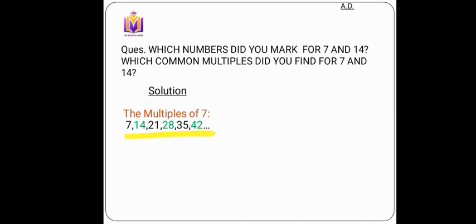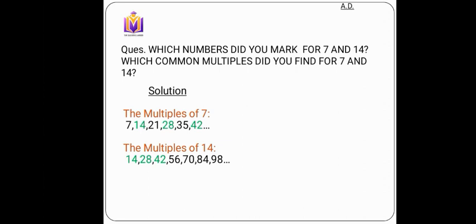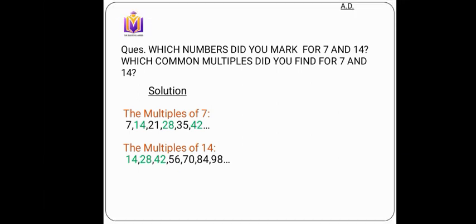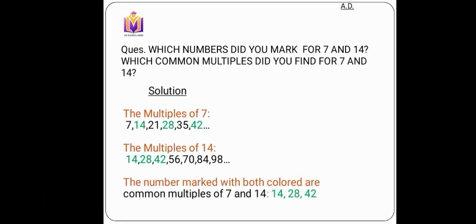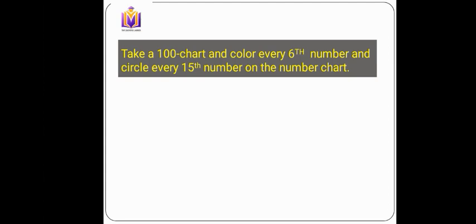These all follow the table of seven, so they are all multiples of 7. The multiples of 14 are 14, 28, 42, 56, 70, 84, and 98 — they all come in the multiplication table of 14. Now looking at which numbers appear in both, shaded with green: 14, 28, and 42. These are the common multiples of 7 and 14.